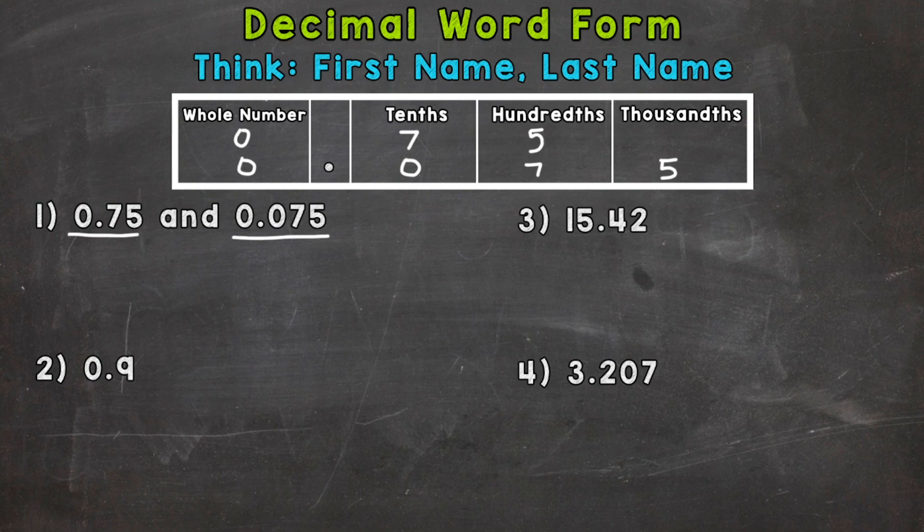So let's write the first one in word form. We need to think first name, last name. When it comes to first name, we just need to say this number as is. So that's a 75. So that's going to be the first name, 75.